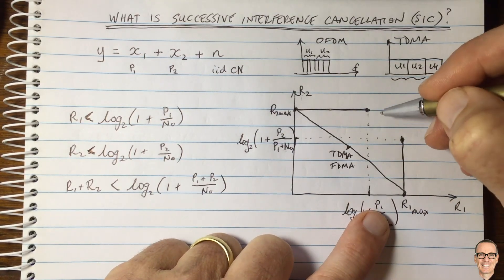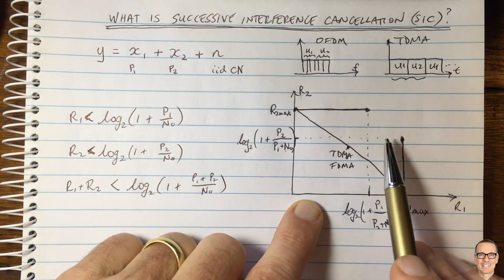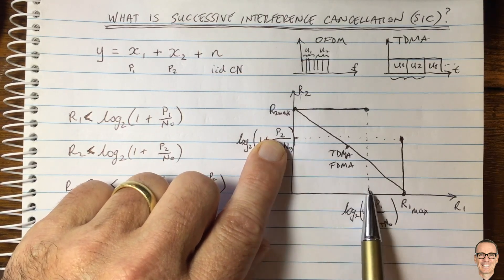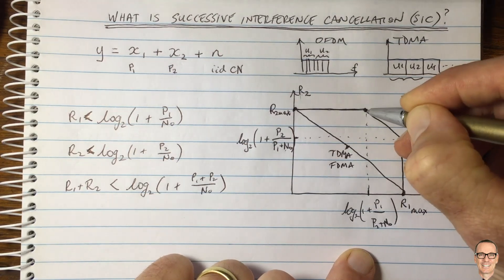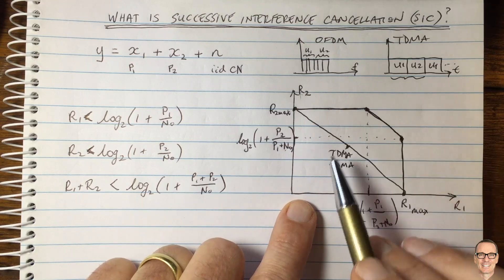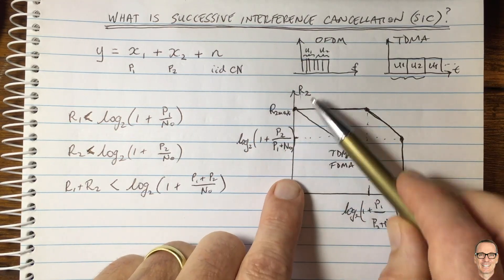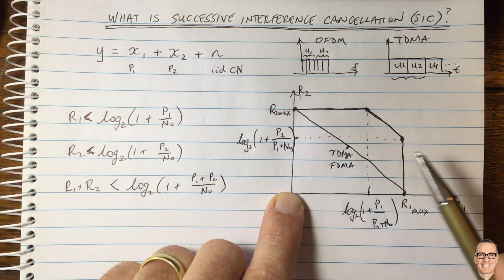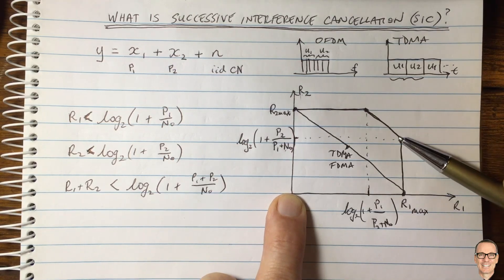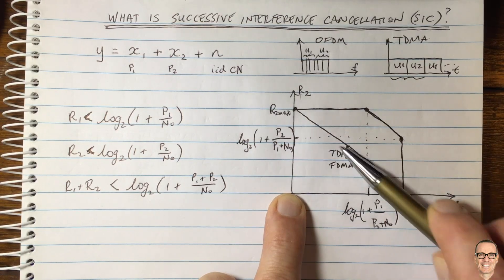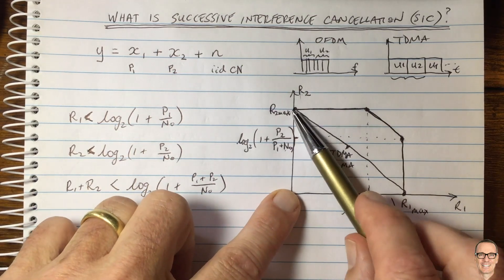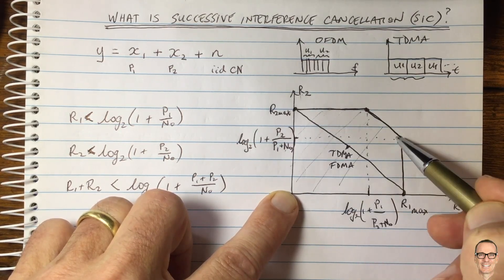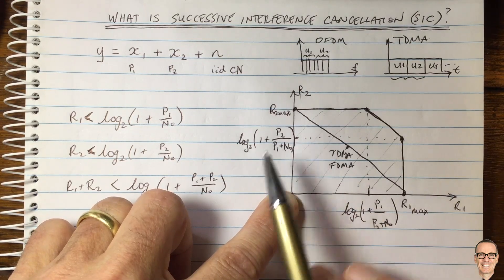What happens in between these two extreme points is that you can timeshare between sending a lower rate for user 1 and a lower rate for user 2. By timesharing any fraction between those two corner points, you can achieve any result on this boundary line. This is the successive interference cancellation result: it enables a rate pair that is much more advantageous compared to standard TDMA and FDMA under the same fixed-power constraint. You can achieve any pair of rates inside this region using the successive cancellation approach.